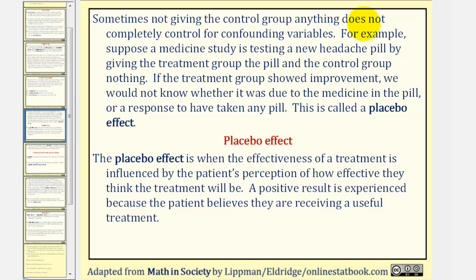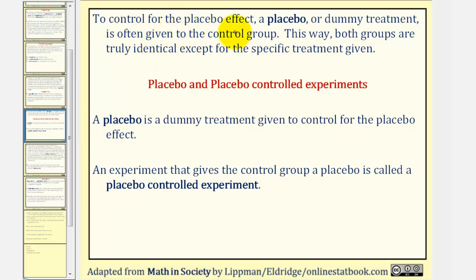Sometimes not giving the control group anything does not completely control for confounding variables. For example, suppose a medicine study is testing a new headache pill by giving the treatment group the pill and the control group nothing. If the treatment group showed improvement, we would not know whether it was due to the medicine in the pill or a response to having taken any pill — this is called the placebo effect. The placebo effect is when the effectiveness of a treatment is influenced by the patient's perception of how effective they think the treatment will be. To control the placebo effect, a placebo, or dummy treatment that looks just like the real treatment but doesn't have the active ingredient, is often given to the control group. This way, both groups are truly identical except for the specific treatment given. A placebo is a dummy treatment given to control for the placebo effect, and an experiment that gives a control group a placebo is called a placebo-controlled experiment.